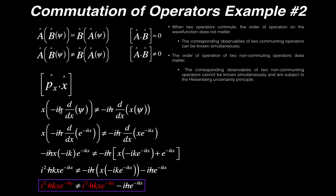So we have negative i h-bar times the first derivative with respect to x of the wave function. To work through this example it's helpful to pick a specific wave function. We'll pick a simple one: e to the negative i k x. The reason for picking this is that the wave function is explicitly a function of x, which makes it easier to evaluate.